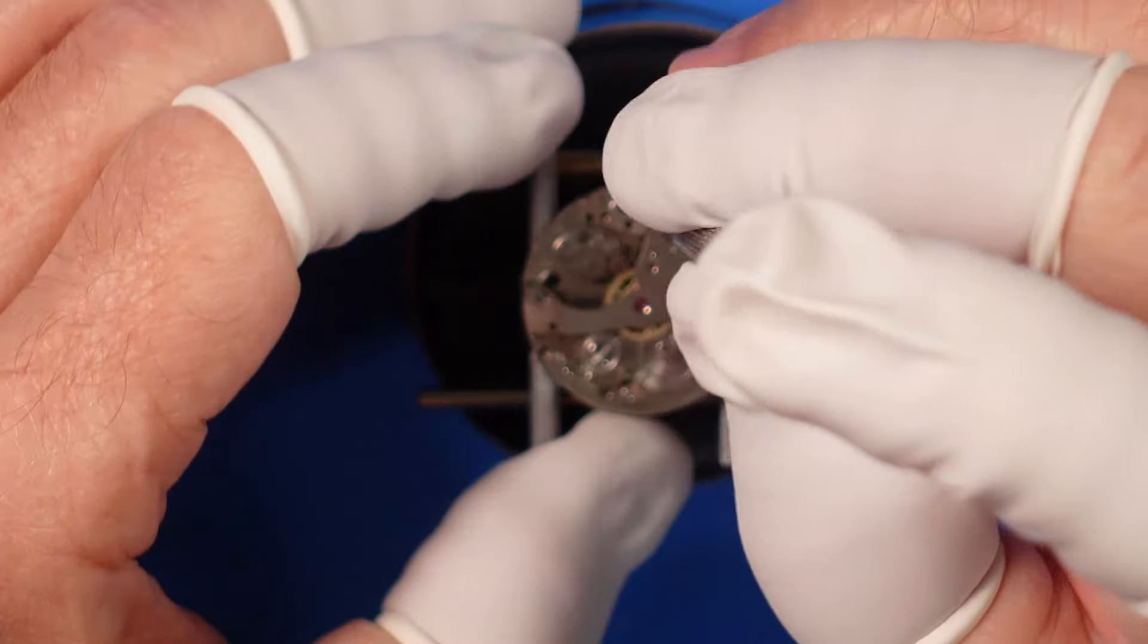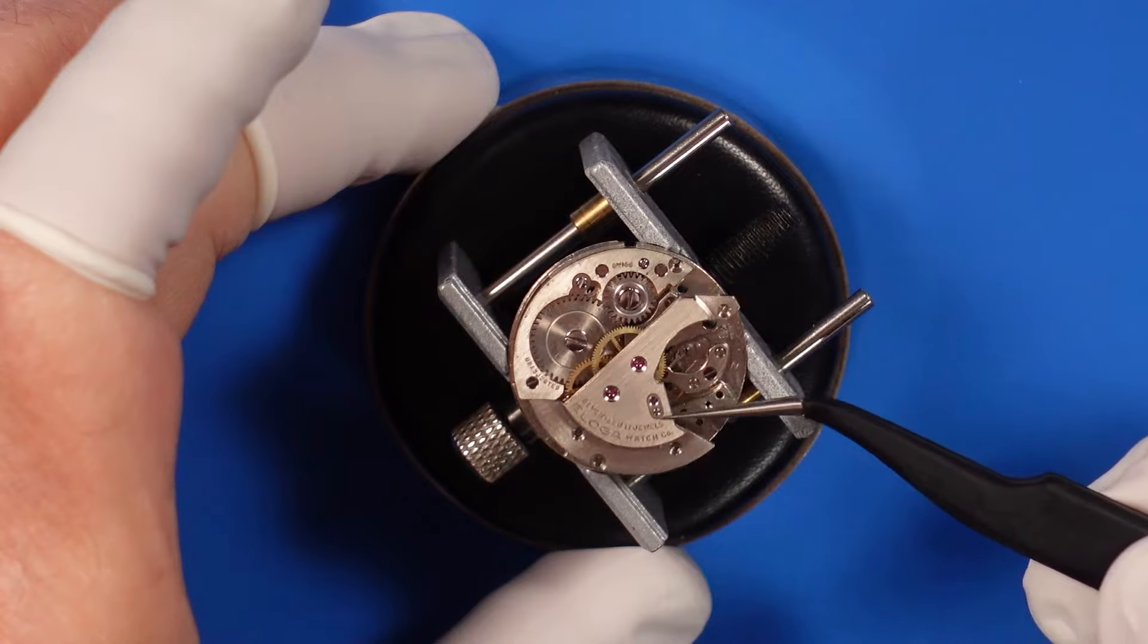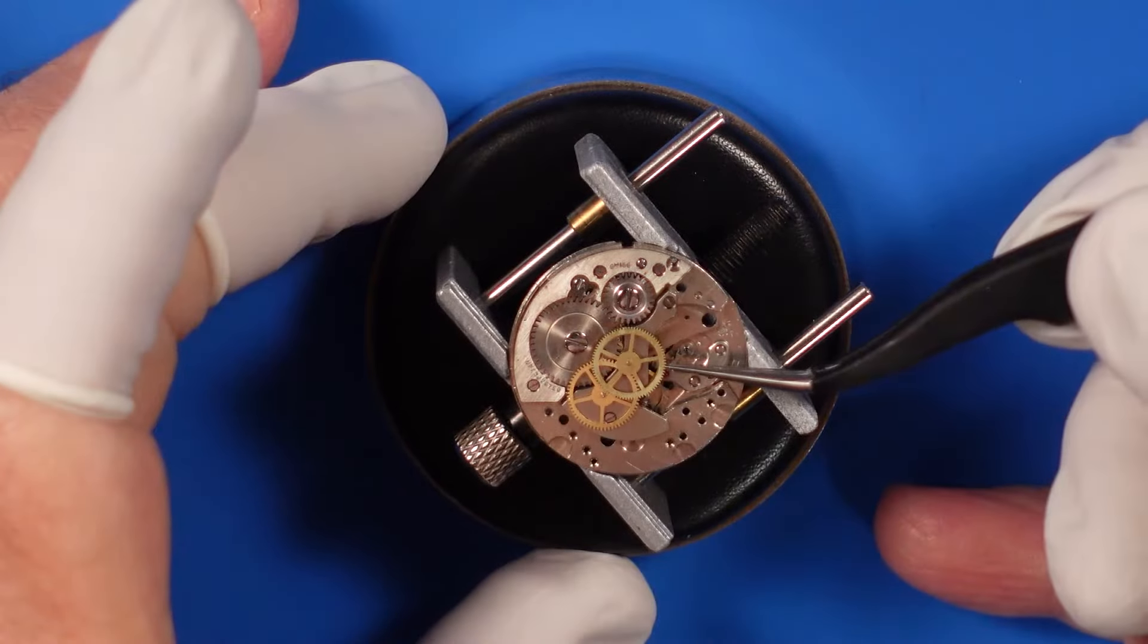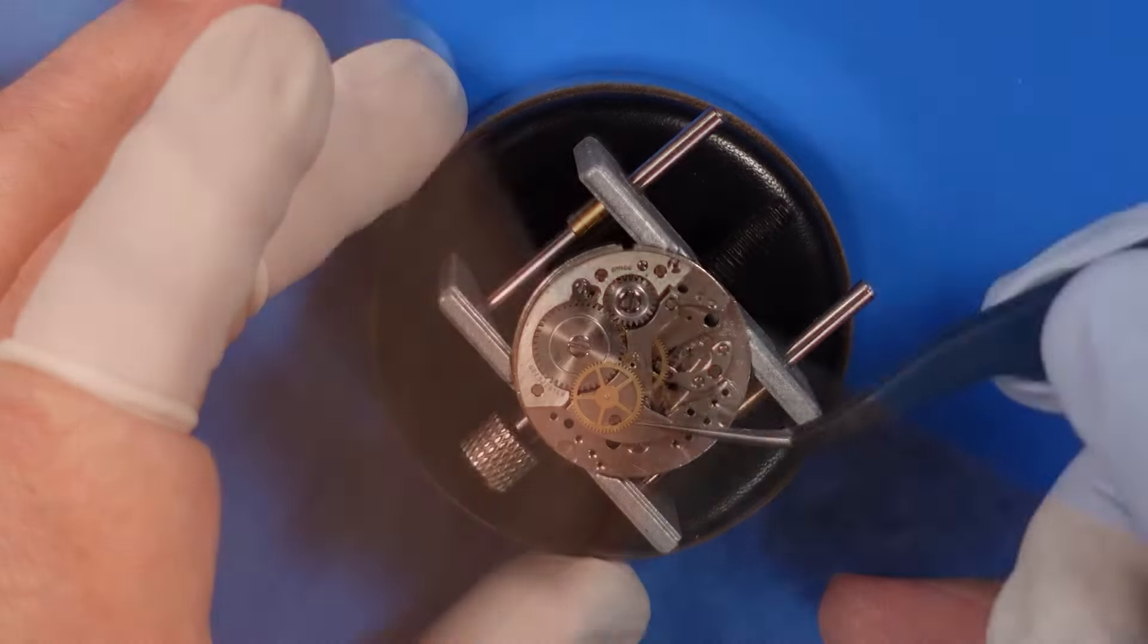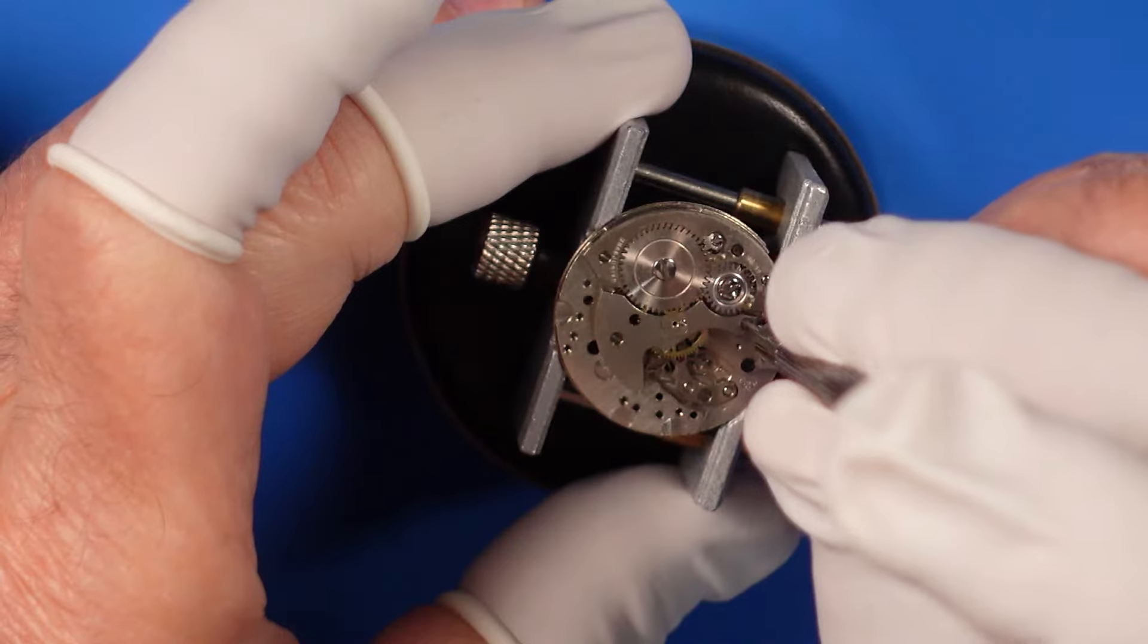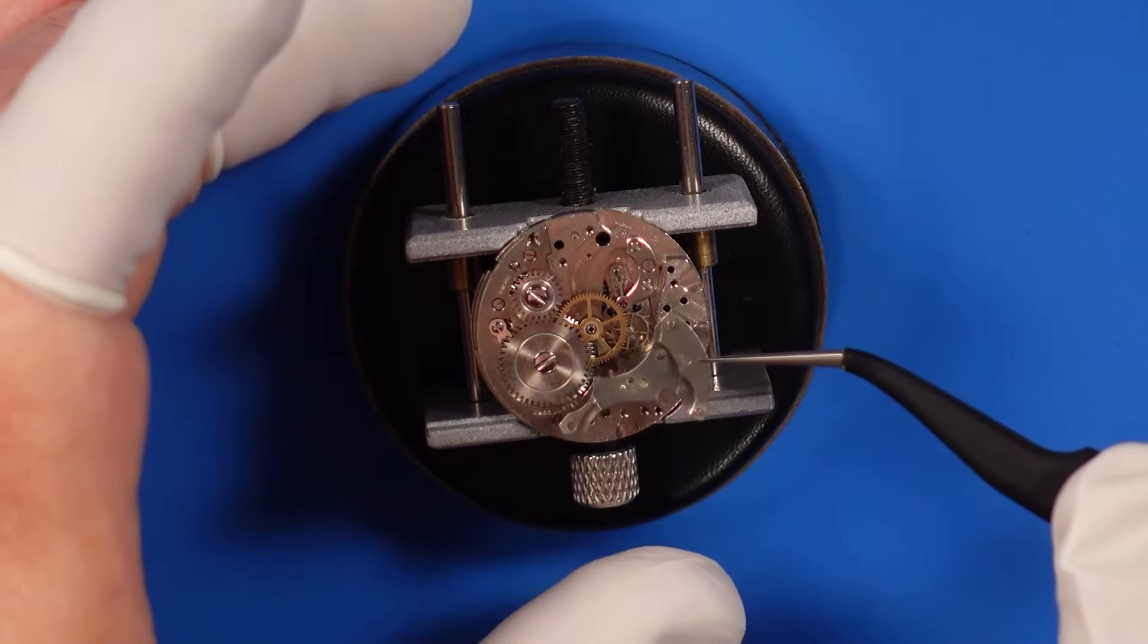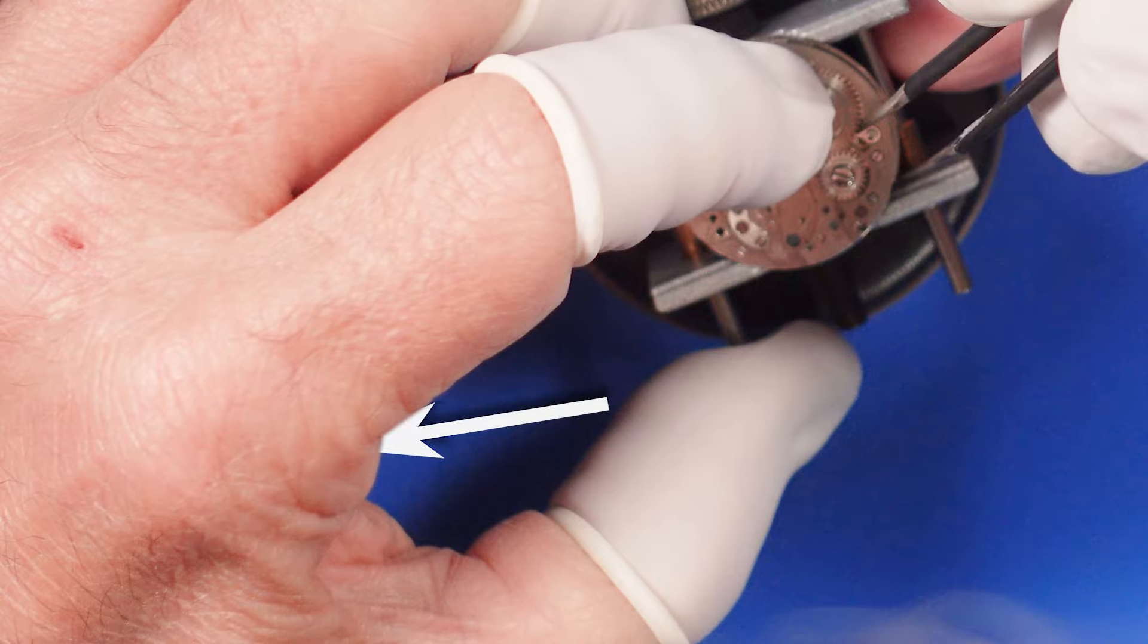The gears that turn the hands, or train of wheels, is held in place by the train bridge. Whoa! Did you see that? That's what happens when there's some power left in the spring. Hey, did you notice that the bridge is branded Eloga, a totally different watch company? In fact, the AS 1187 movement shows up in many watches, and the original train bridge may have been swapped out. We'll carefully lift out the fourth wheel, which has this long axle that attaches to the second hand, and then the third wheel.